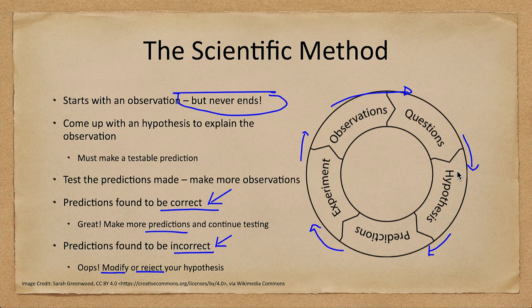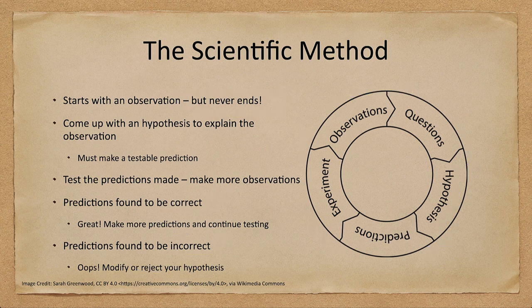Sometimes the data is so inconsistent with your hypothesis that you have to stop, reject it, and come up with a new one to continue the cycle. You may adjust your hypothesis or completely change it depending on your observations, but the key is that things are continually tested. Even something like relativity is constantly being pushed to its limits, even though it has been around for over a hundred years, to see where those limits are and better understand the universe.